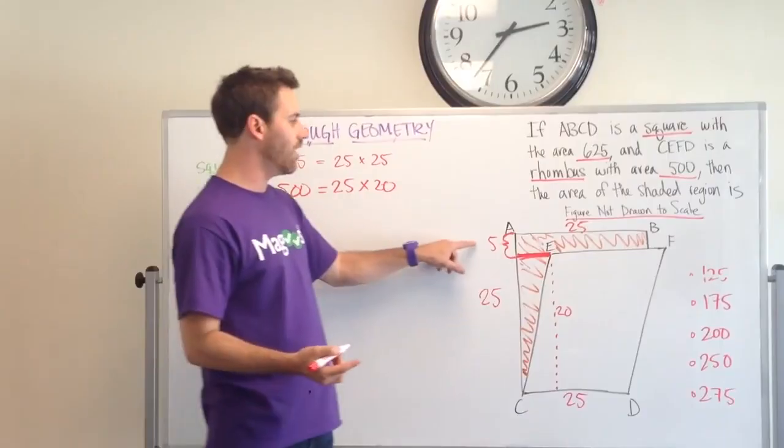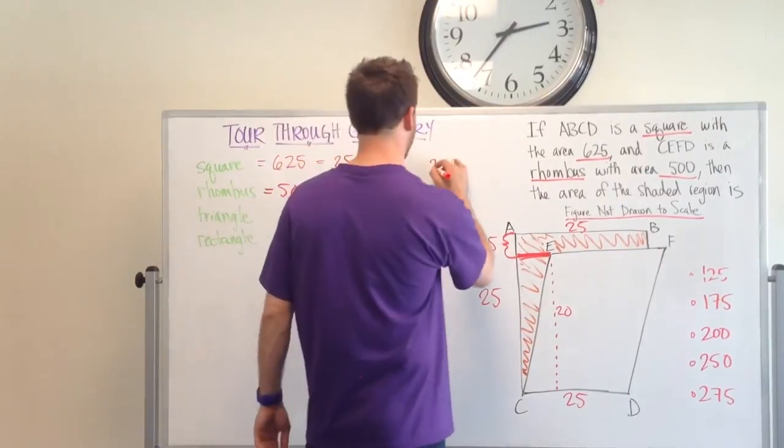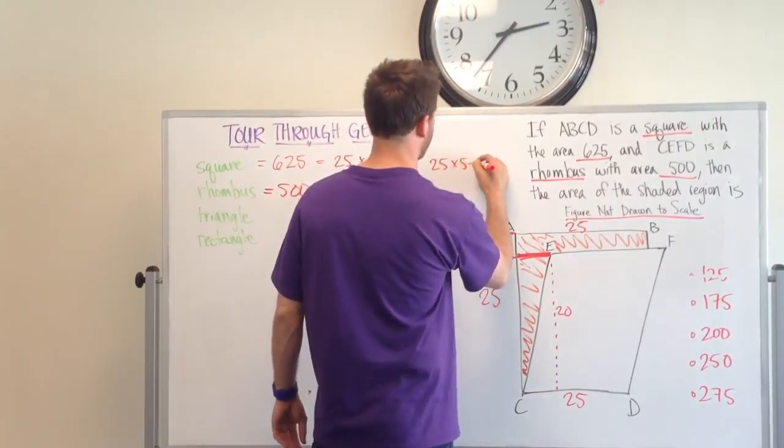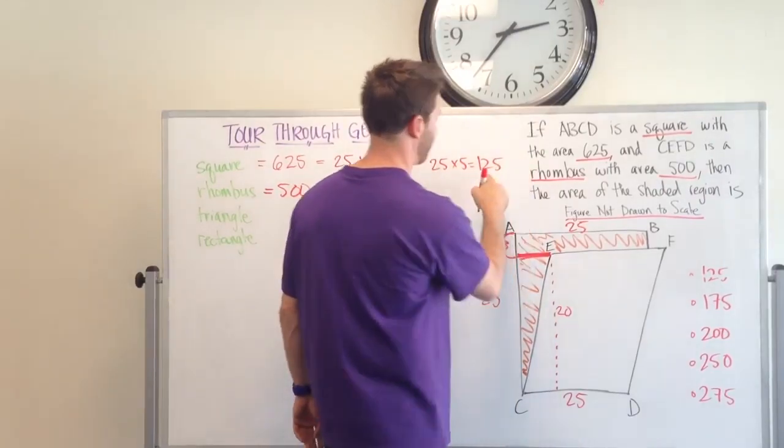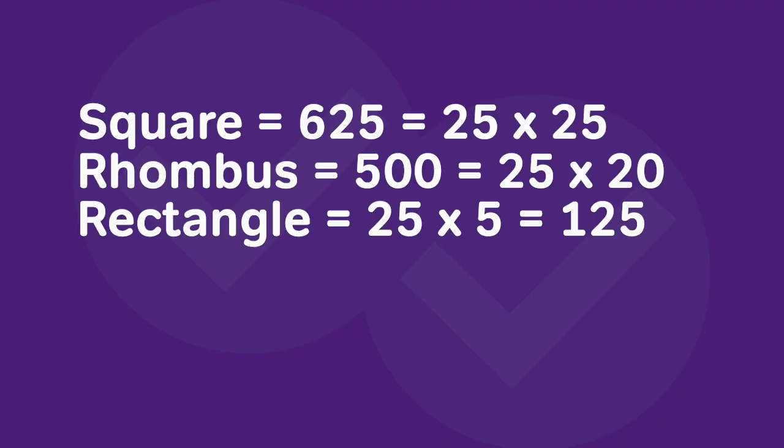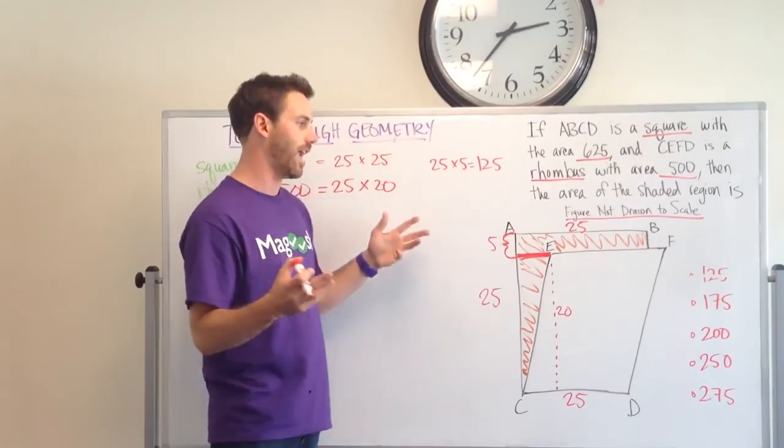Now I know that the area of the rectangle is 25 times 5, which is equal to 125. Excellent. So now all I need to do is find the area of this triangle and then add it to 125, and I'll have my answer.